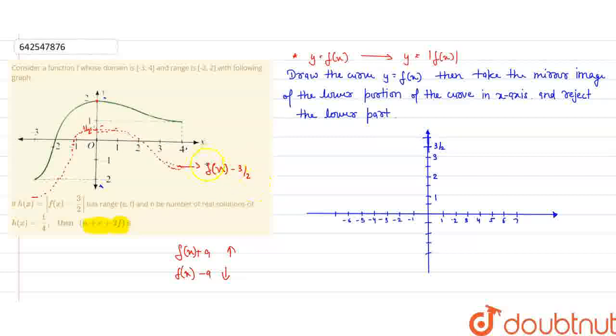Now, I want to take the modulus of this function. We have steps to find the modulus of the function. Let us draw the curve y equals x. We draw the function, I take it as f(t). Then, draw the function f(t). Then, take the mirror image of the lower portion. That is, this lower portion mirror image, the mirror image of the lower portion of the curve in x-axis. And reject the lower part.